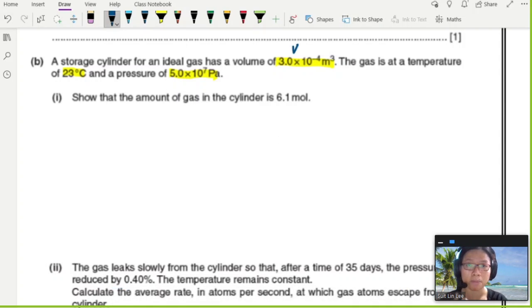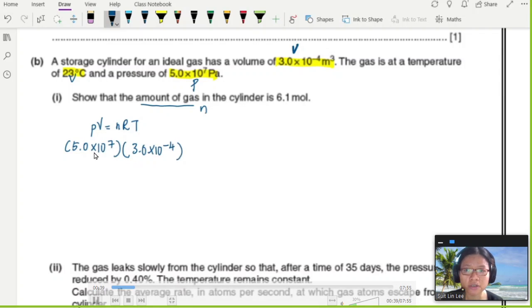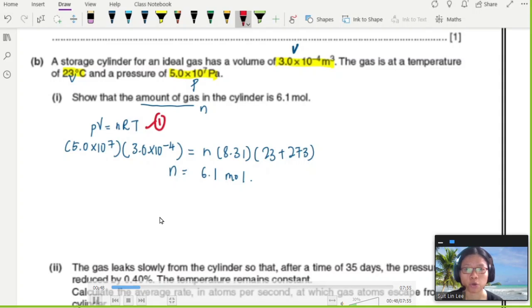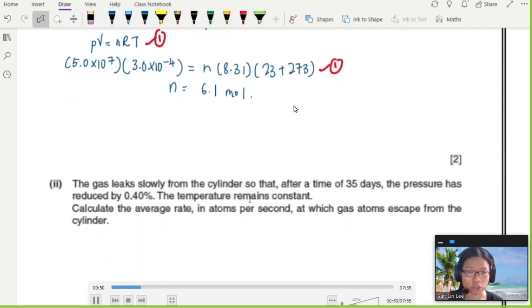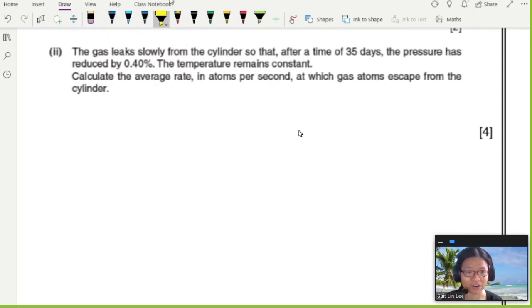Whenever we want to find the number of moles, we use the ideal gas equation. You're given P, V, and T. So we'll use PV = nRT by substituting pressure, volume, and temperature. Make sure everything is in SI units. Temperature must be in Kelvin. Move things around and you'll get n = 6.1 mol. One mark for stating the equation, one mark for correct substitution. Very easy.